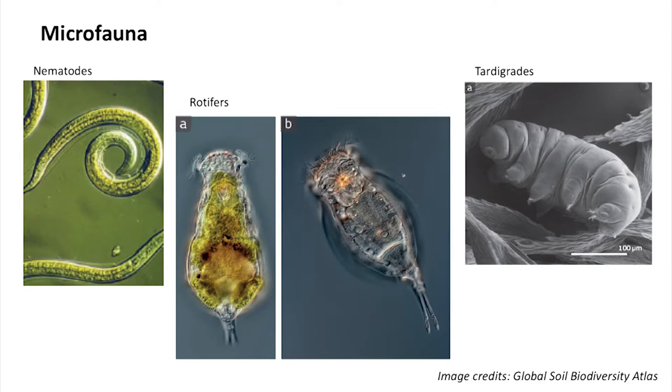Moving up in size from those microscopic organisms, we get into the soil animals. Some very small soil animals — most only visible with a microscope — include nematodes, rotifers, and tardigrades. These are small animals that live in the water films in soil, cruising around and grazing on bacteria, fungi, and tiny bits of organic matter. They play a role as predators in the soil food web. Much like fungi, nematodes often get a bad reputation because a few are plant parasites, but the vast majority are beneficial — helping to cycle organic matter and release nutrients through that process.